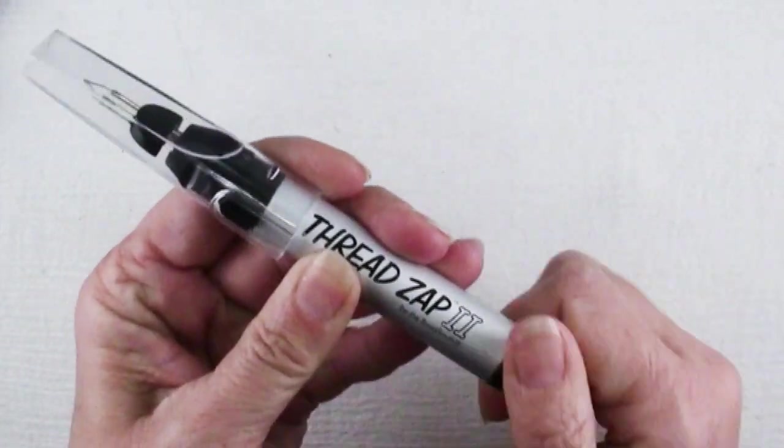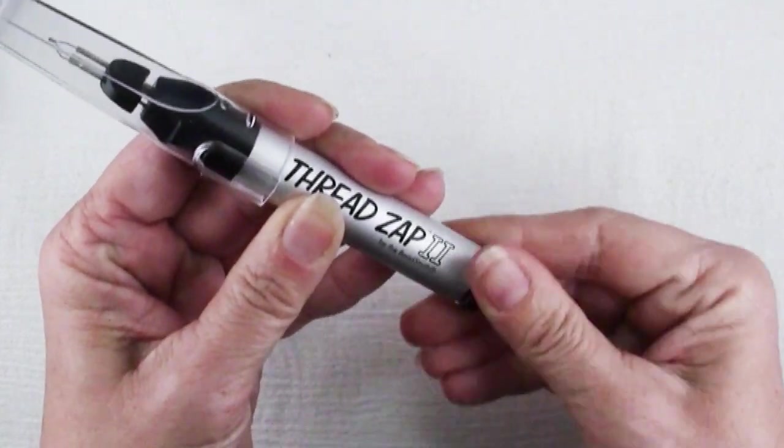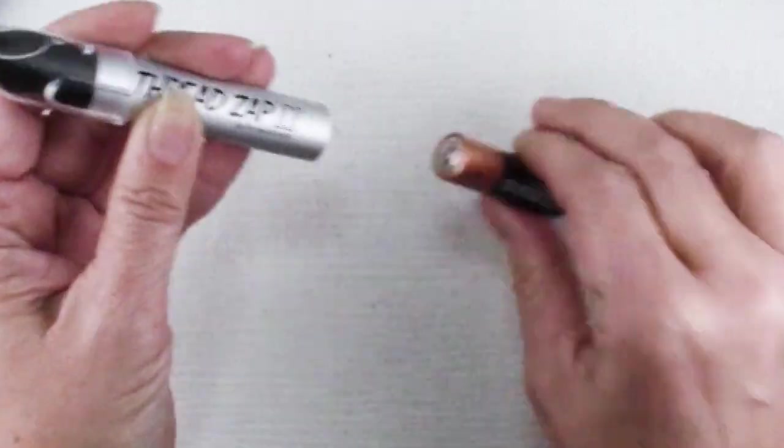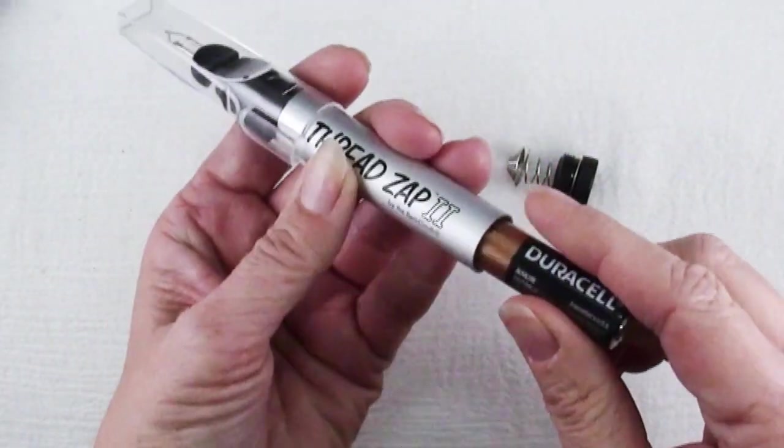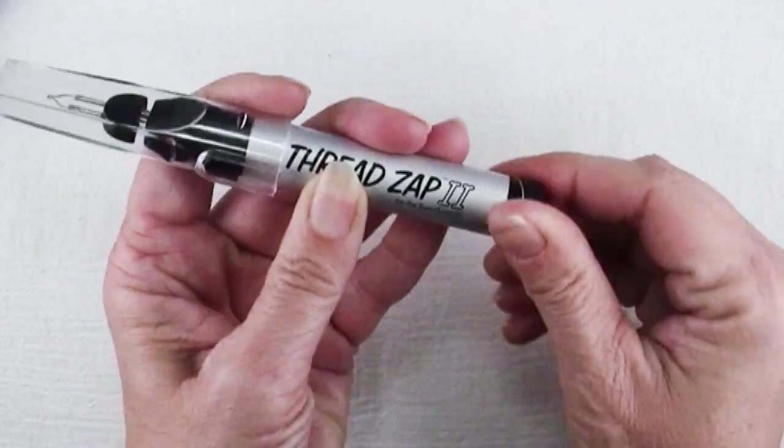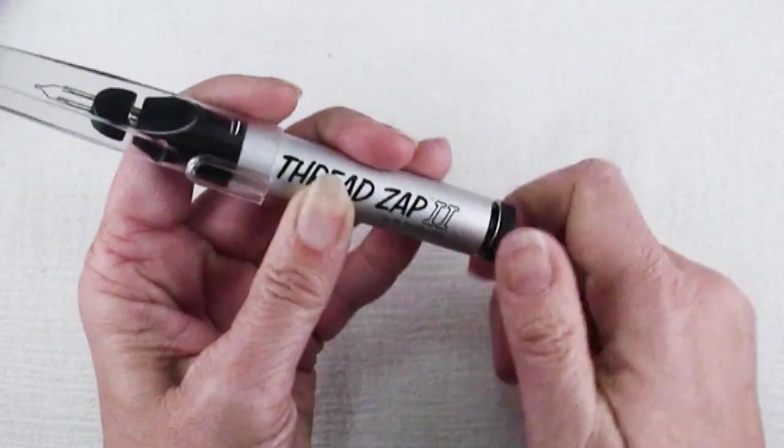There are lots of different brands and all the ones that I have seen are battery operated. This one takes a AA battery, so if it stops working or if it's not getting hot quickly enough for you, try replacing the battery or just put in a better quality battery.